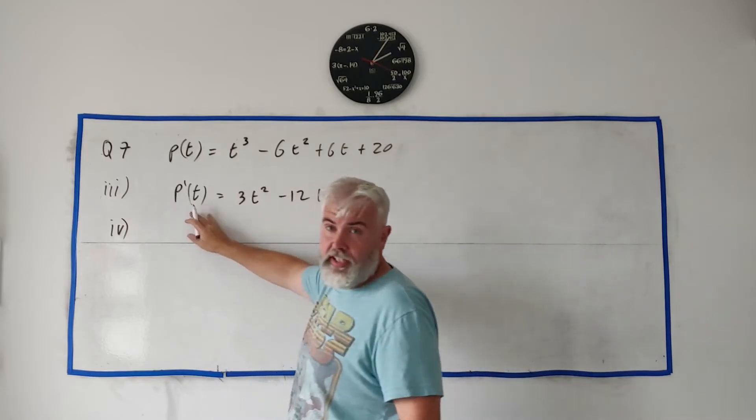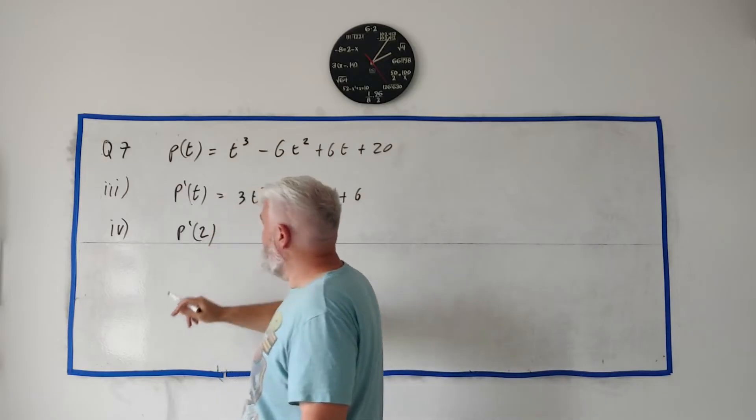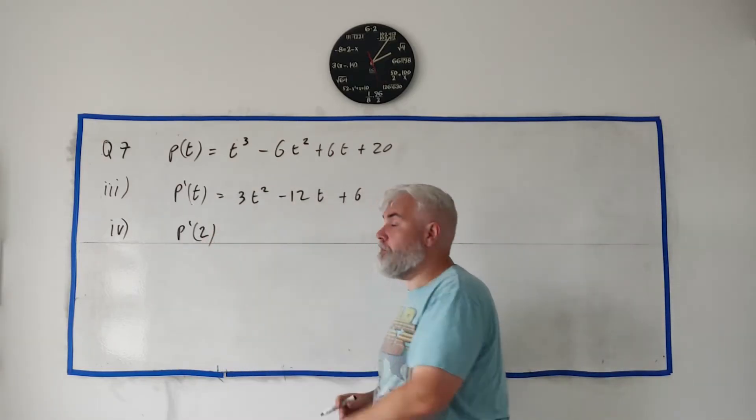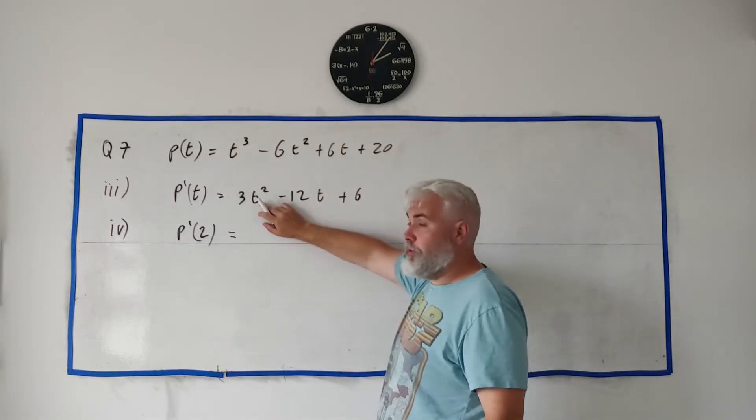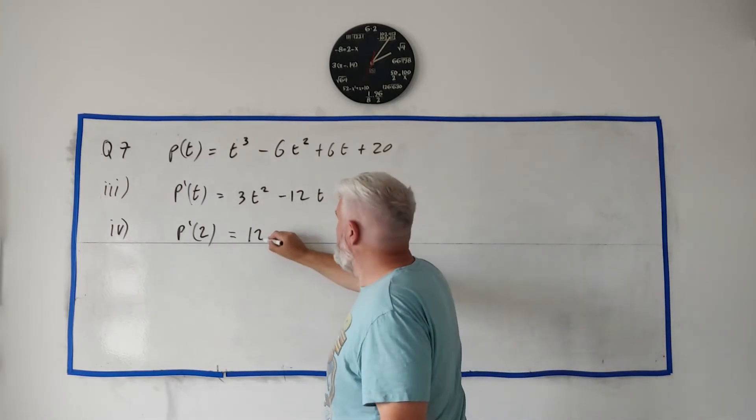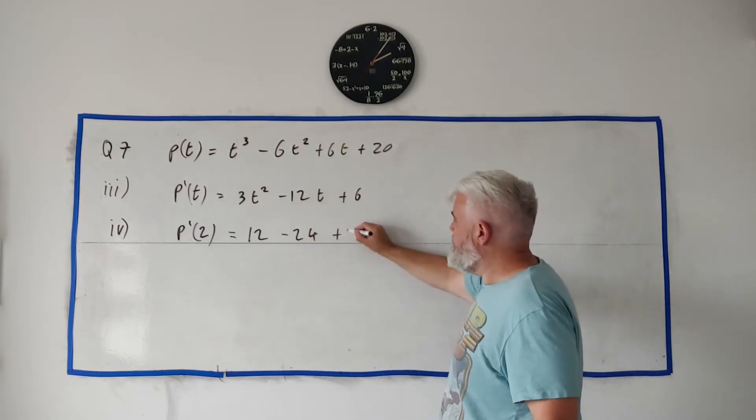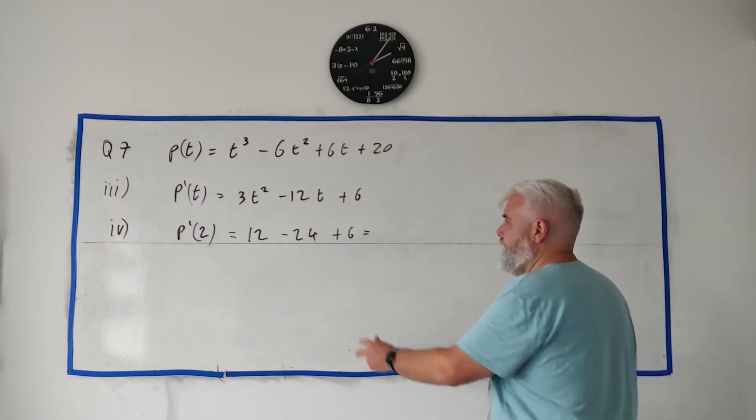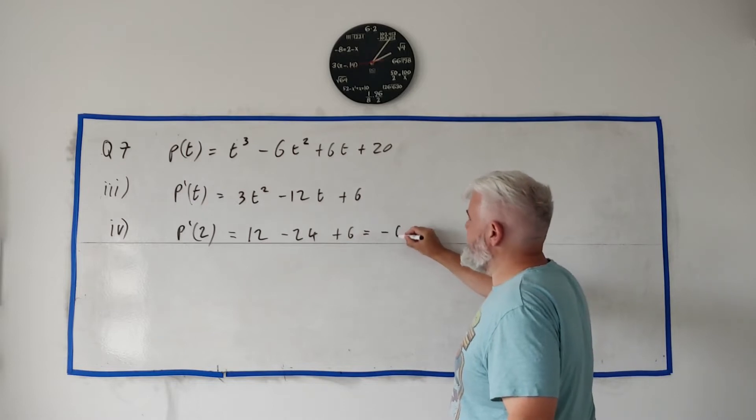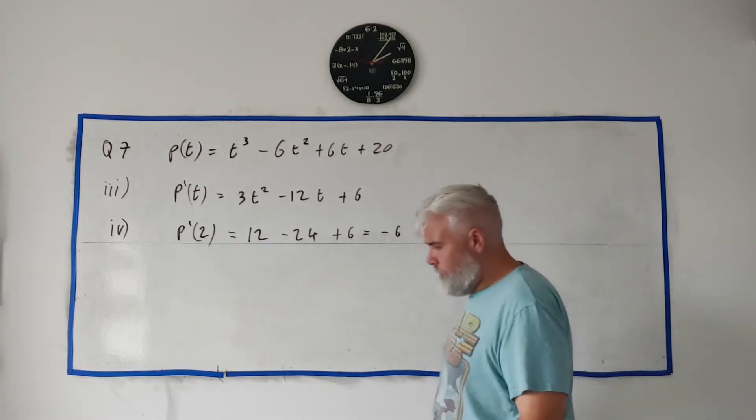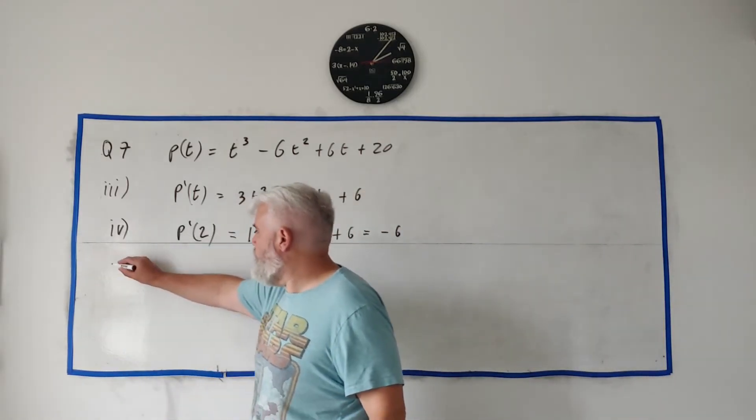For part four they want us to continue to use the derivative, but they want us to find p'(2). So when we put 2 in here, what do we get? Well, 2 times 2 is 4, 4 times 3 is 12, and 12 times 2 is 24. So we get 24 minus 24 plus 6. This is minus 12 plus 6, which is minus 6.